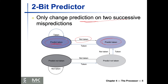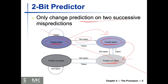We only pay one price on a second misprediction. We were not taken twice and arrived at the 'predict not taken' state. Now it turns from predict taken to predict not taken. For not taken, if it's not taken again we stay in not taken; if it's taken we go back. On every two successive mispredictions we switch sides. Using a two-bit predictor we pay the price one fewer time on average.